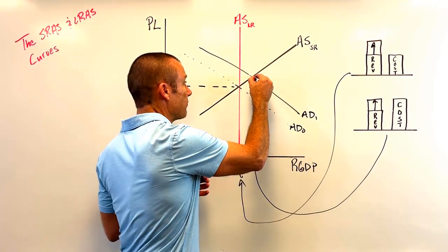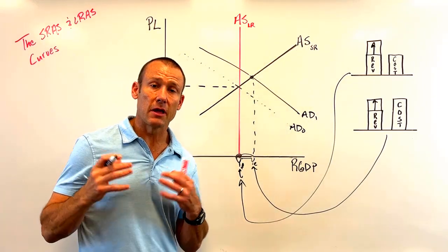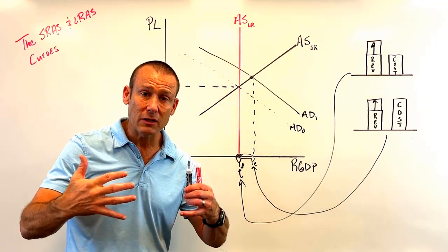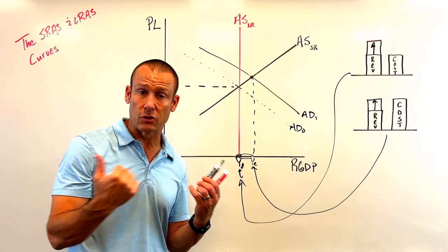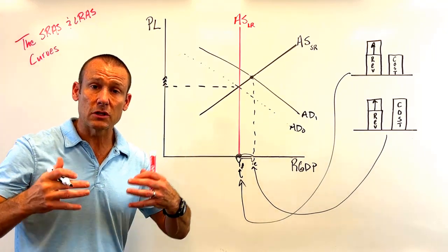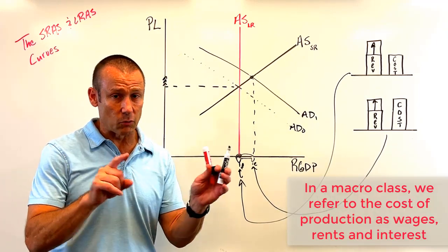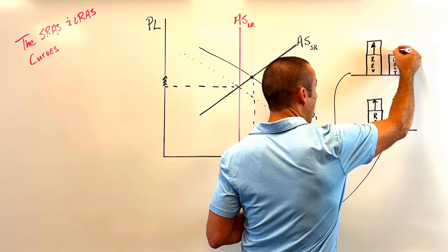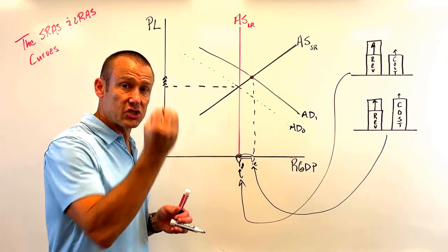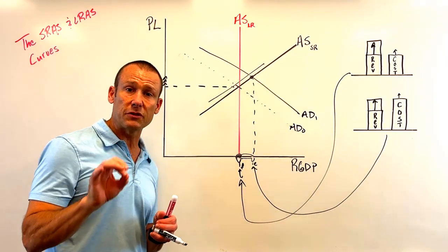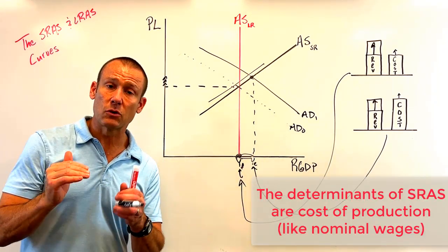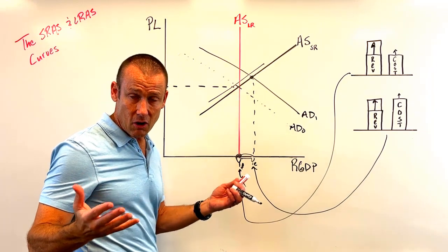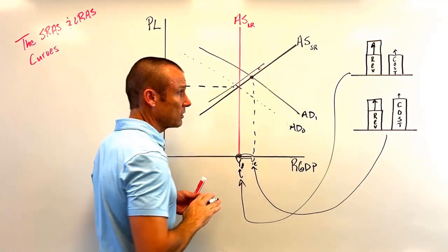We do know that eventually our cost of production are going to begin to adjust to those price level changes — to those revenue changes. Eventually those costs are going to start to go up: wages, rents, and interest, especially wages. As they begin to adjust, our costs are going to start to go up. As those costs start to go up, this curve begins to shift to the left, because what shifts the aggregate supply curve are the cost of production. As those costs of production go up, it becomes less profitable to produce, so you're going to see the SRAS or ASSR start shifting to the left.